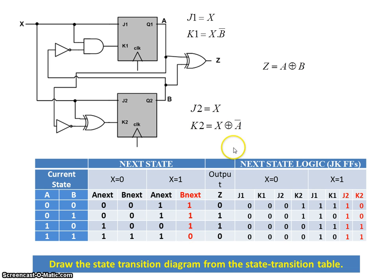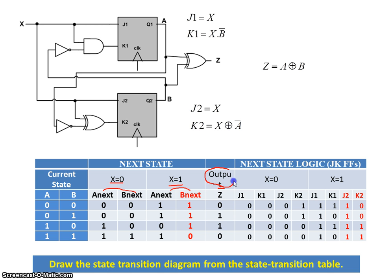Now we have a complete state table with current states, next states for X=0 and X=1, and the output. Since the output Z depends only on the current state, this is going to be a Moore state machine.